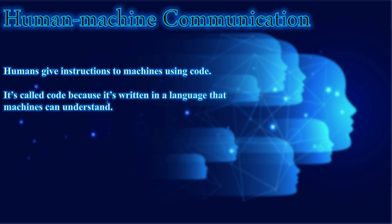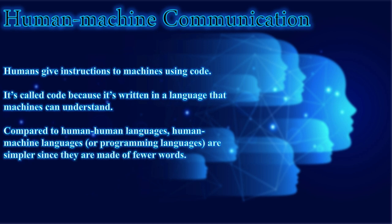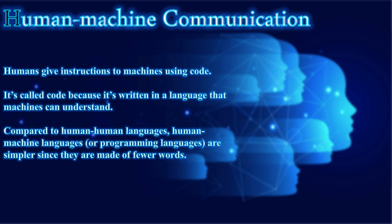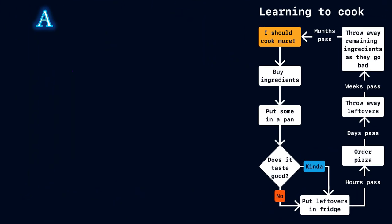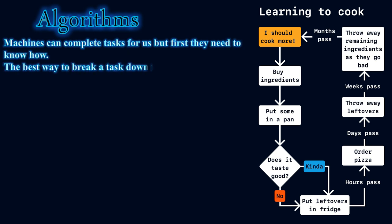Human-machine communication: humans give instructions to machines using code. It's called code because it's written in a language that machines can understand. Compared to human languages, programming languages are simpler since they are made of fewer words. Learning a programming language is much easier than learning a second human language like Japanese, Chinese, or German, because programming languages have fewer words.